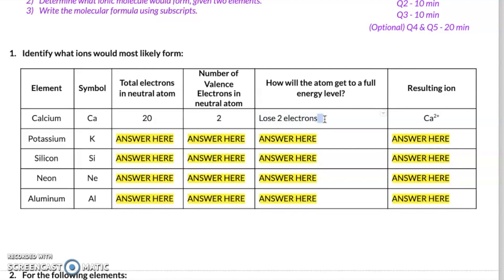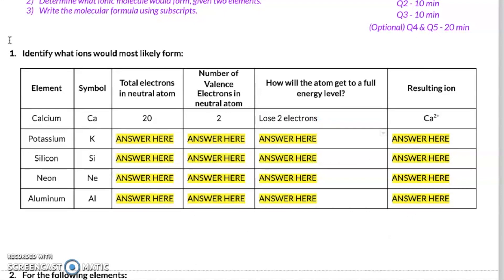Cation — a positive total charge ion. Look at how we write that: CA stands for calcium, two plus. That tells me that I now have two more protons than electrons, which makes sense because I just lost two electrons. I'll leave the remainder of question number one — this table — for you to practice.